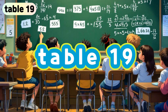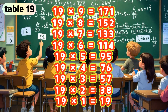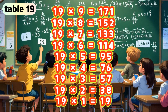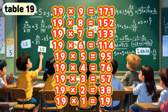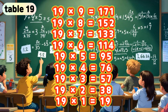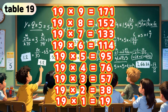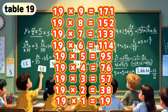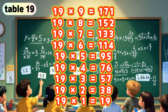Table 19. 19 times 9 is 171. 19 times 8 is 152. 19 times 7 is 133. 19 times 6 is 114. 19 times 5 is 95. 19 times 4 is 76. 19 times 3 is 57. 19 times 2 is 38. 19 times 1 is 19.